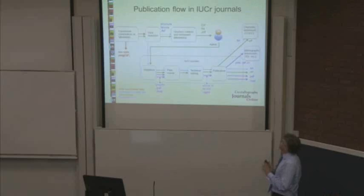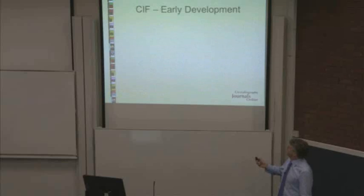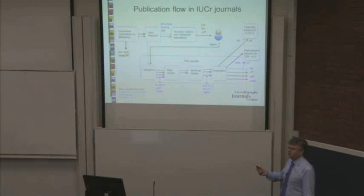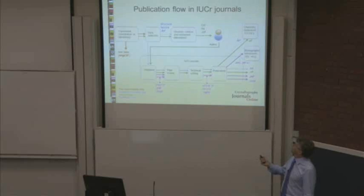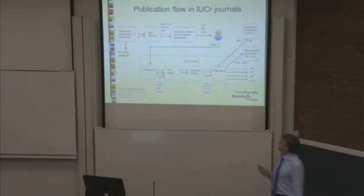This is how the various files flow in the publication system. Start with your experiment — you've got your raw data, which could be in imgCIF format. Go through a process of data reduction, get structure factors, then structure refinement, which outputs a CIF. So the CIF and structure factors go to the author.